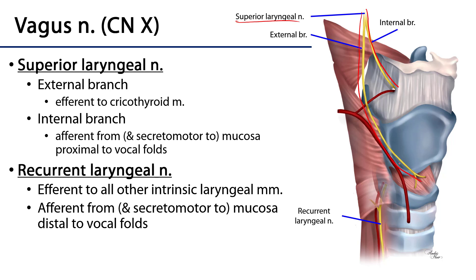The superior laryngeal nerve descends within the carotid sheath and branches into the internal branch and the external branch. The internal branch is somatic sensory and secretomotor to the mucosa superior or proximal to the vocal folds. The external branch is somatomotor or efferent to the cricothyroid muscle. That cricothyroid controls the cricothyroid joint — when it tips, it puts tension on the vocal folds to increase pitch. A helpful way to remember: the internal branch is sensitive on the inside, and the external branch is muscular on the outside.